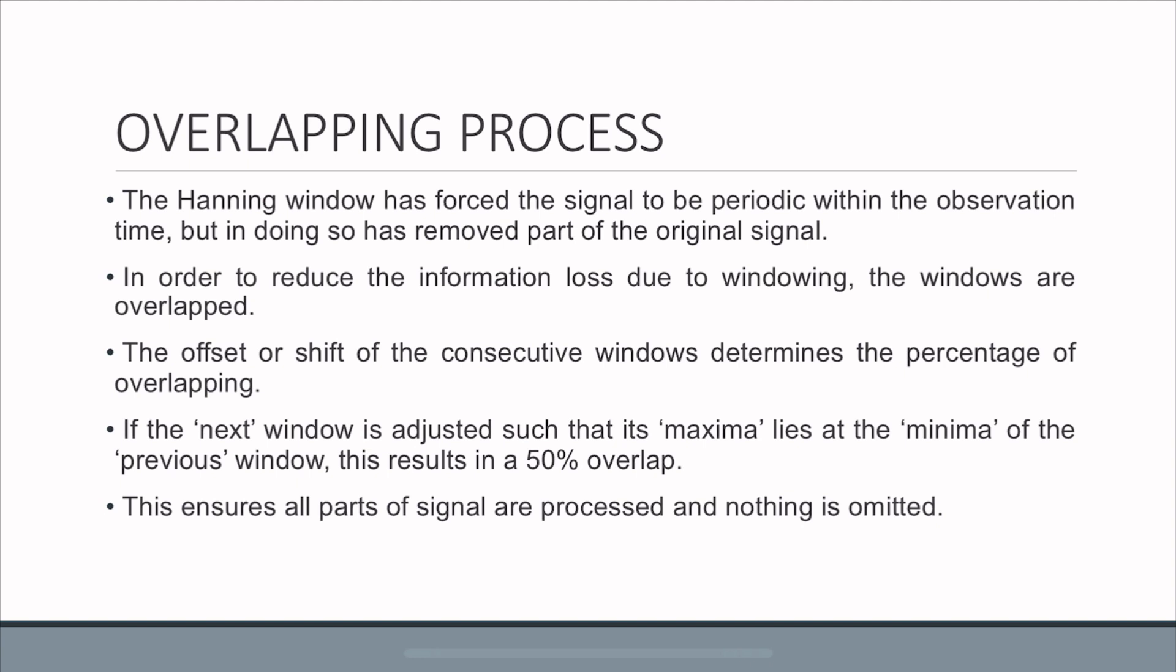So what is the overlapping process? When we apply windowing, we have forced a signal to be periodic within the observation time, but also removed certain part of the signal, which is why we have some information loss. In order to reduce this information loss, we use overlapping and the offset or shift of consecutive windows determines the percentage overlapping.